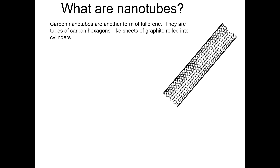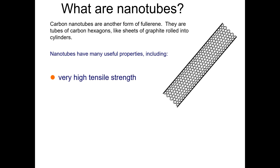What are carbon nanotubes? Carbon nanotubes are another form of carbon — they are sheets of carbon hexagons, like sheets of graphite, rolled into cylinders. You can see one in the figure here. You can clearly observe and identify them according to your knowledge about tubular structures.